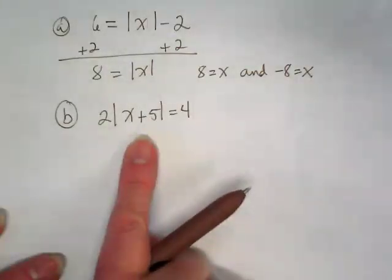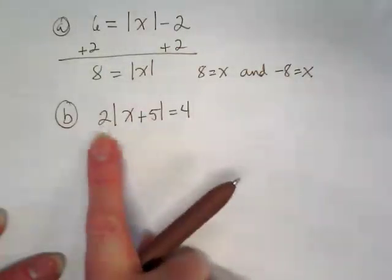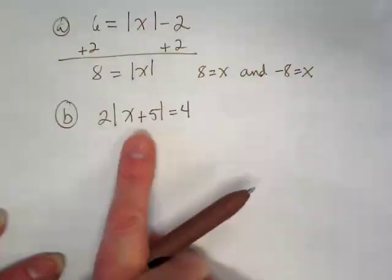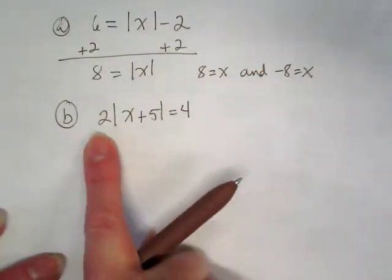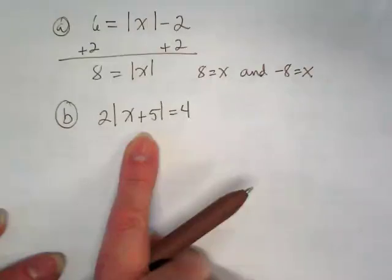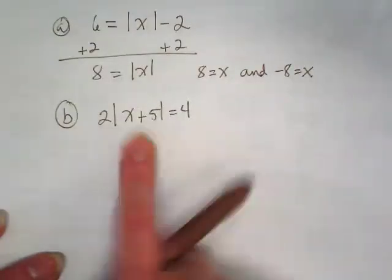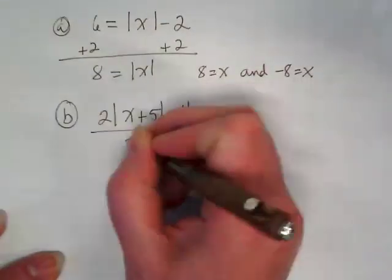Grouping symbols include parentheses, brackets, and absolute values. So this is the same as if I had parentheses here. I don't want to distribute that because that changes what's in the absolute value and I want to get the absolute value isolated. I'm going to divide by 2 first.